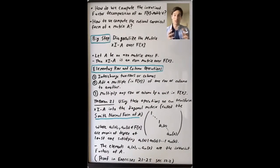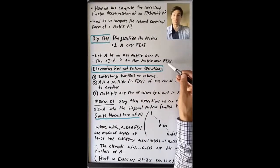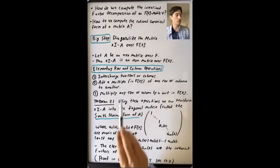The elementary row and column operations come in three types. This is something you're probably familiar with from when you first learned linear algebra with entries in the real numbers. This is the analog. Now we're dealing with a matrix with entries in F[x]. So what are we allowed to do?